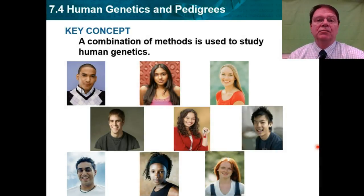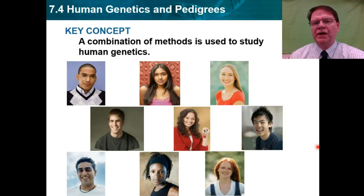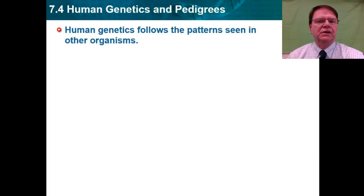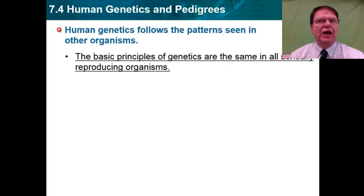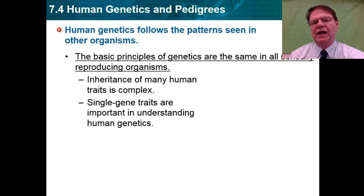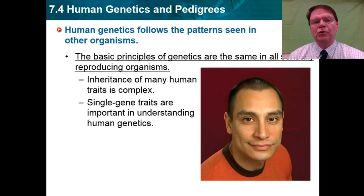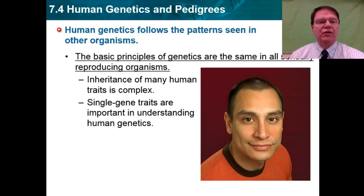Welcome back. We've been looking at more complex patterns of inheritance in humans. When we're looking at human genetics, we typically apply a combination of methods that study inheritance patterns within families. It's more complex than just dominance and recessiveness, co-dominance, and incomplete dominance, and yet the same basic principles of genetics apply in sexually reproducing organisms. The inheritance of many human traits is complex — there are single gene traits, and others controlled by more than one gene.